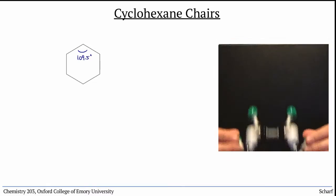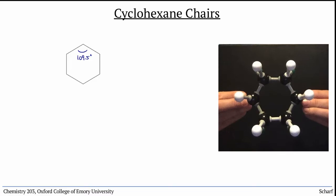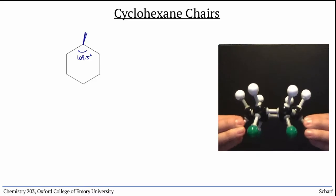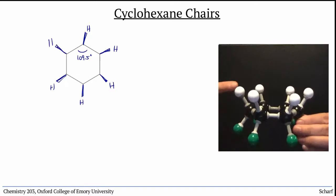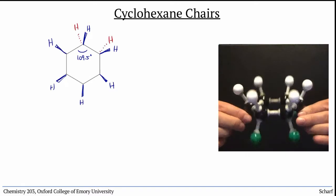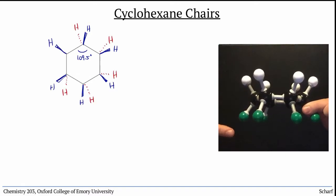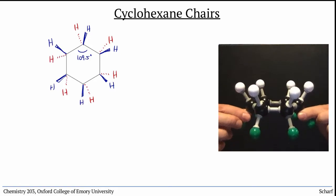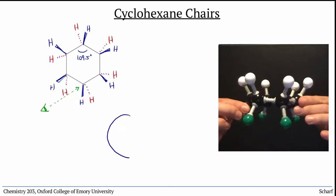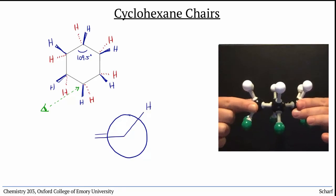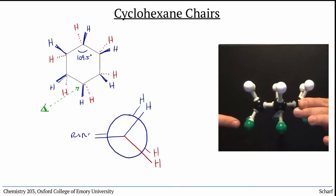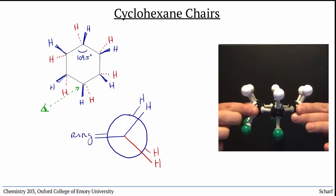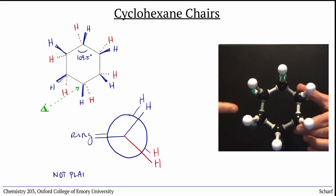But imagine the cyclohexane was entirely flat. You would have six hydrogens pointed all in one direction and six hydrogens pointed all in the other. If we take a look along one of the CC bonds in this conformation, we can see that they are eclipsed. This is not stable, so cyclohexanes are not planar.